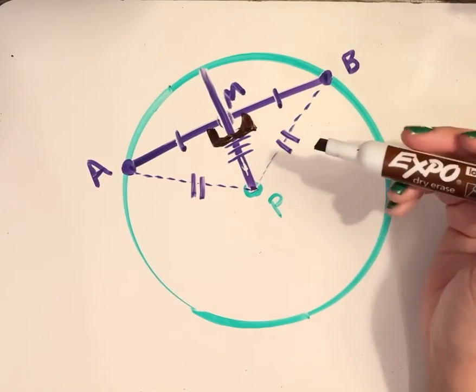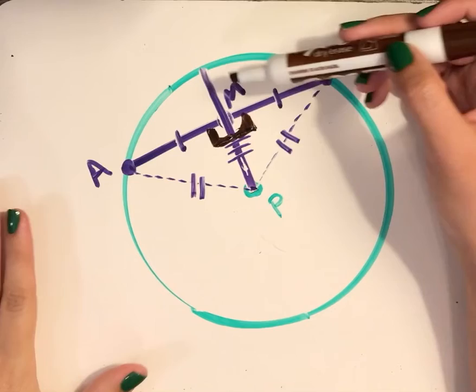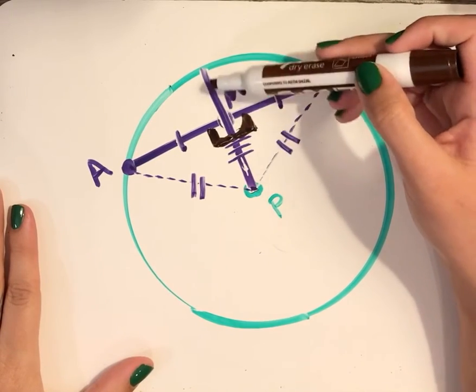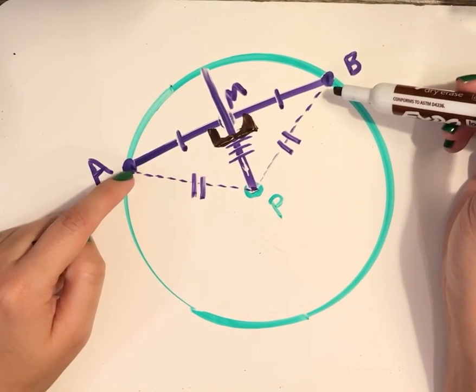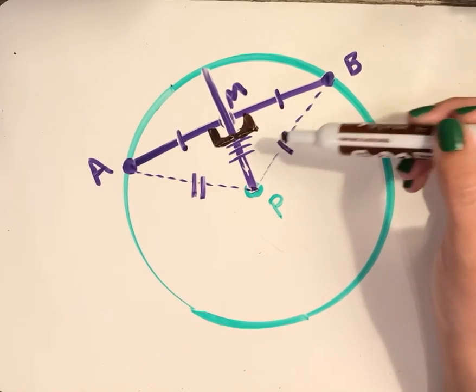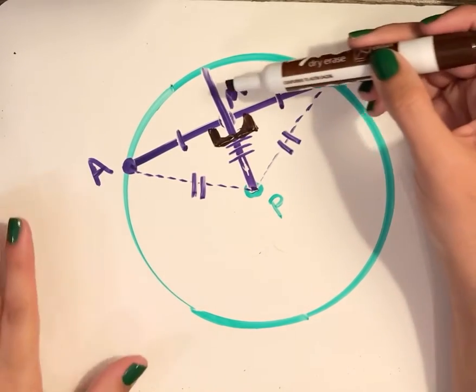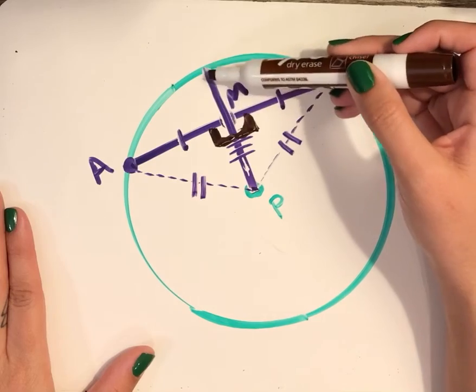This all goes to prove the theorem that any radius that bisects a chord is also going to be perpendicular to that chord.